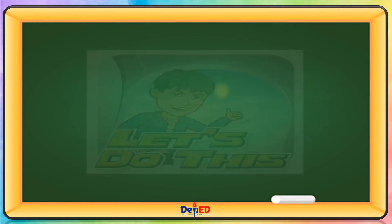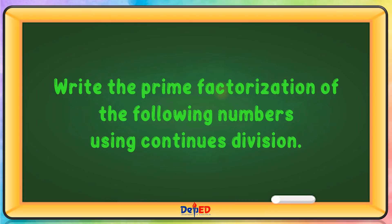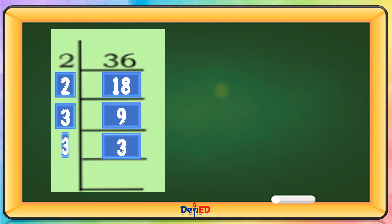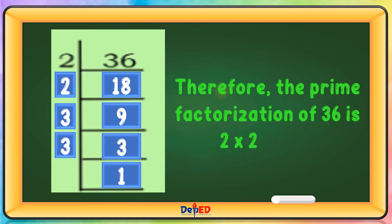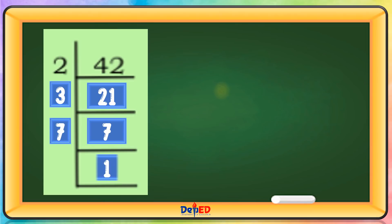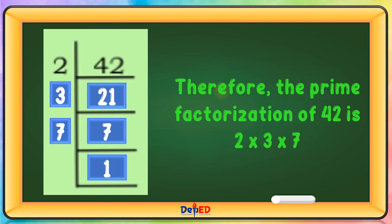Let's do this. Write the prime factorization of the following numbers using continuous division. Therefore, the prime factorization of 36 is 2 times 2 times 3 times 3. Therefore, the prime factorization of 42 is 2 times 3 times 7.